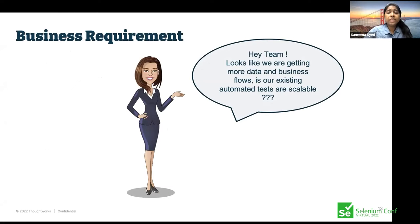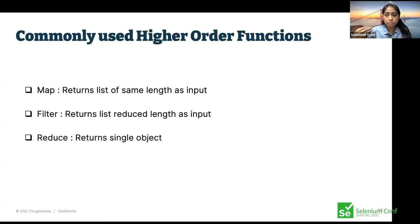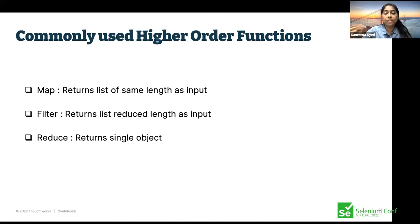As we get more data and more business flows, we want our existing automated test cases to be scalable. To understand refactoring from non-FP to FP, we need to understand higher order functions — one of the major FP concepts. Higher order functions are functions that take another function as an argument or return a function. A function that takes a function as argument, or whose return type is a function, is called a higher order function. In JavaScript, we have built-in higher order functions: map, filter, and reduce.